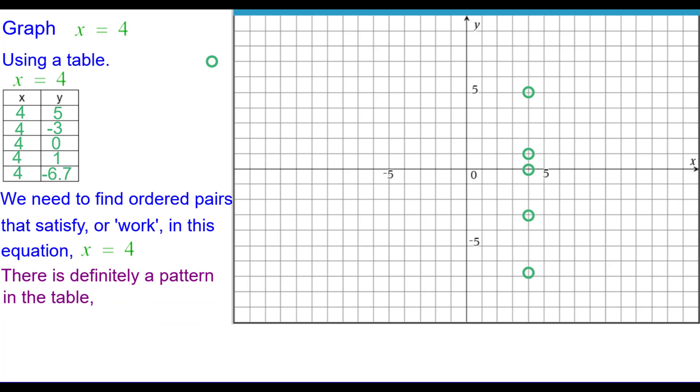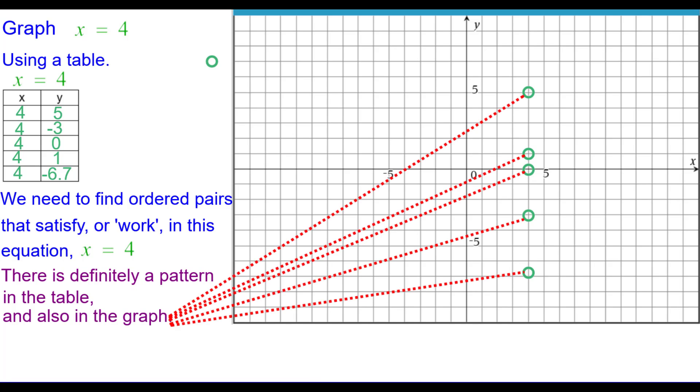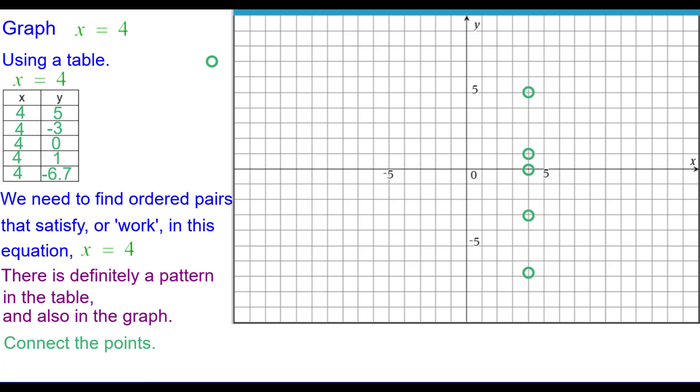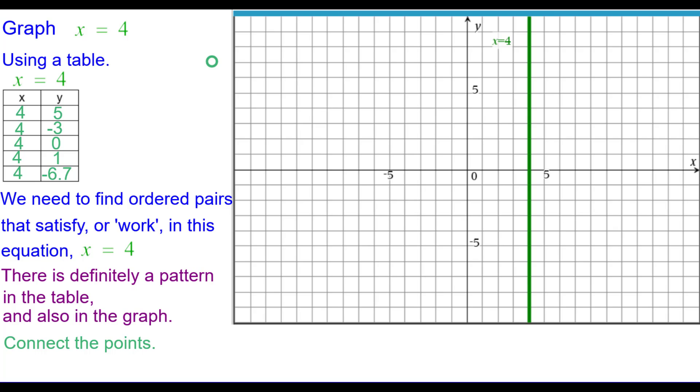There is definitely a pattern in the table. All the x-coordinates are 4. And also in the graph, all those points are along the same line. Connect the points. And here's the graph of x equals 4.